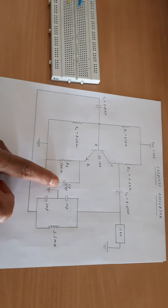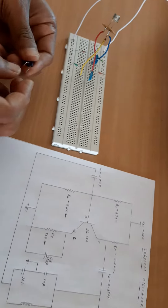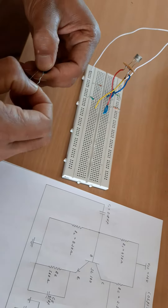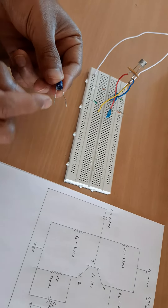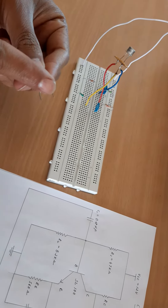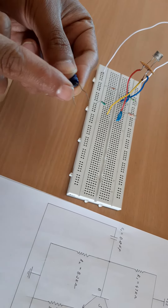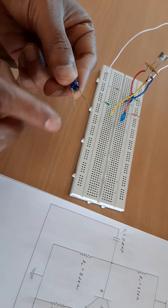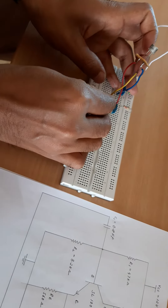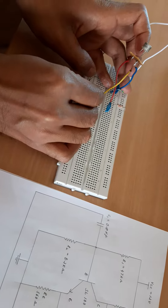Now we need one more capacitor, that is 47 microfarad, the emitter bypass capacitor. We can clearly observe one end is longer and the other is shorter — the longer one is positive and the shorter one is negative. I am connecting the positive end to the emitter side and the negative end to ground.